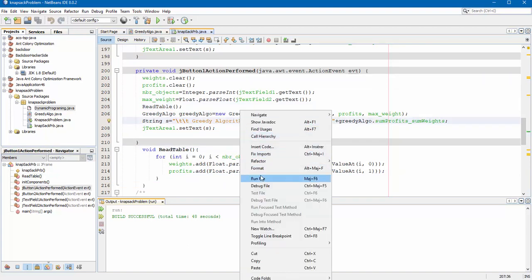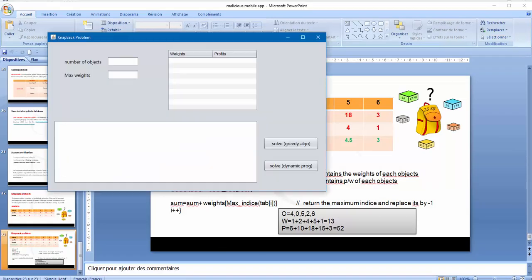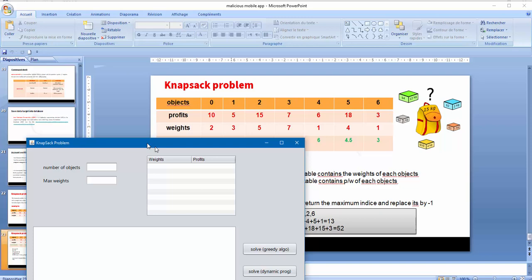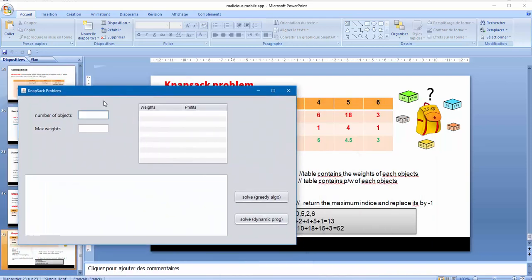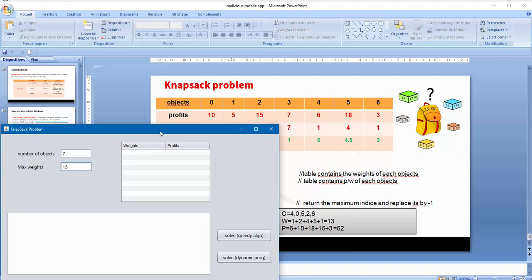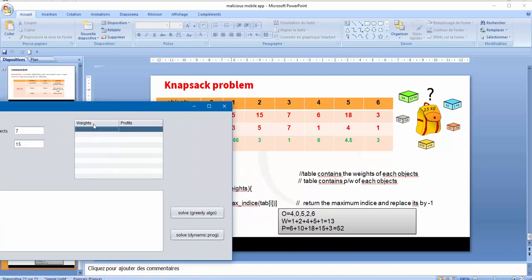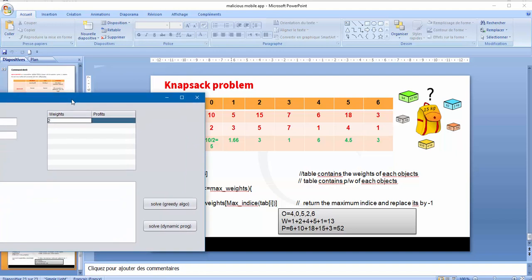Let's run. So let's try this example. Number of objects. We have 7 objects. Maximum weights. 15. And the weights. We have 2, 3, 5, 7, 1, 4, 1.